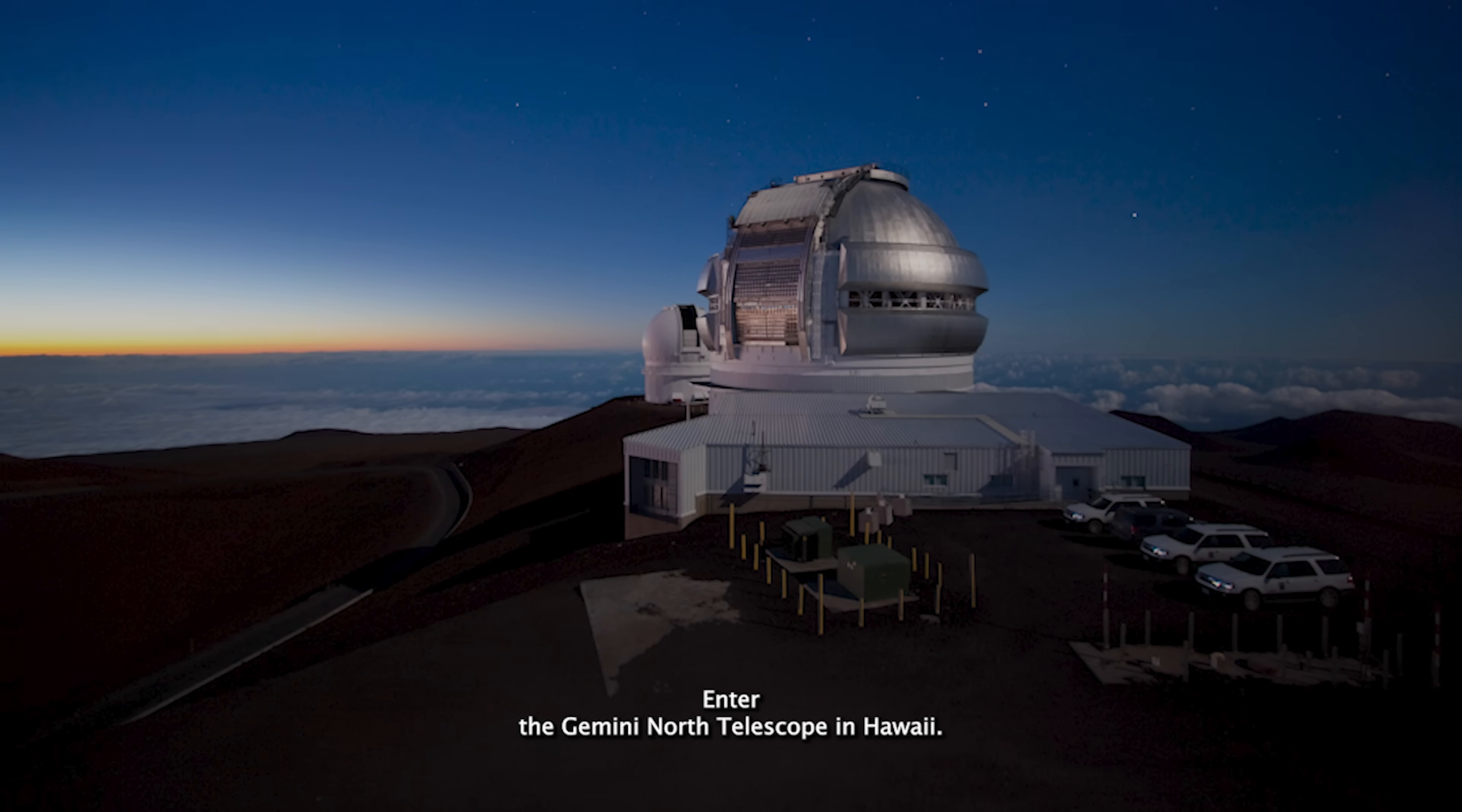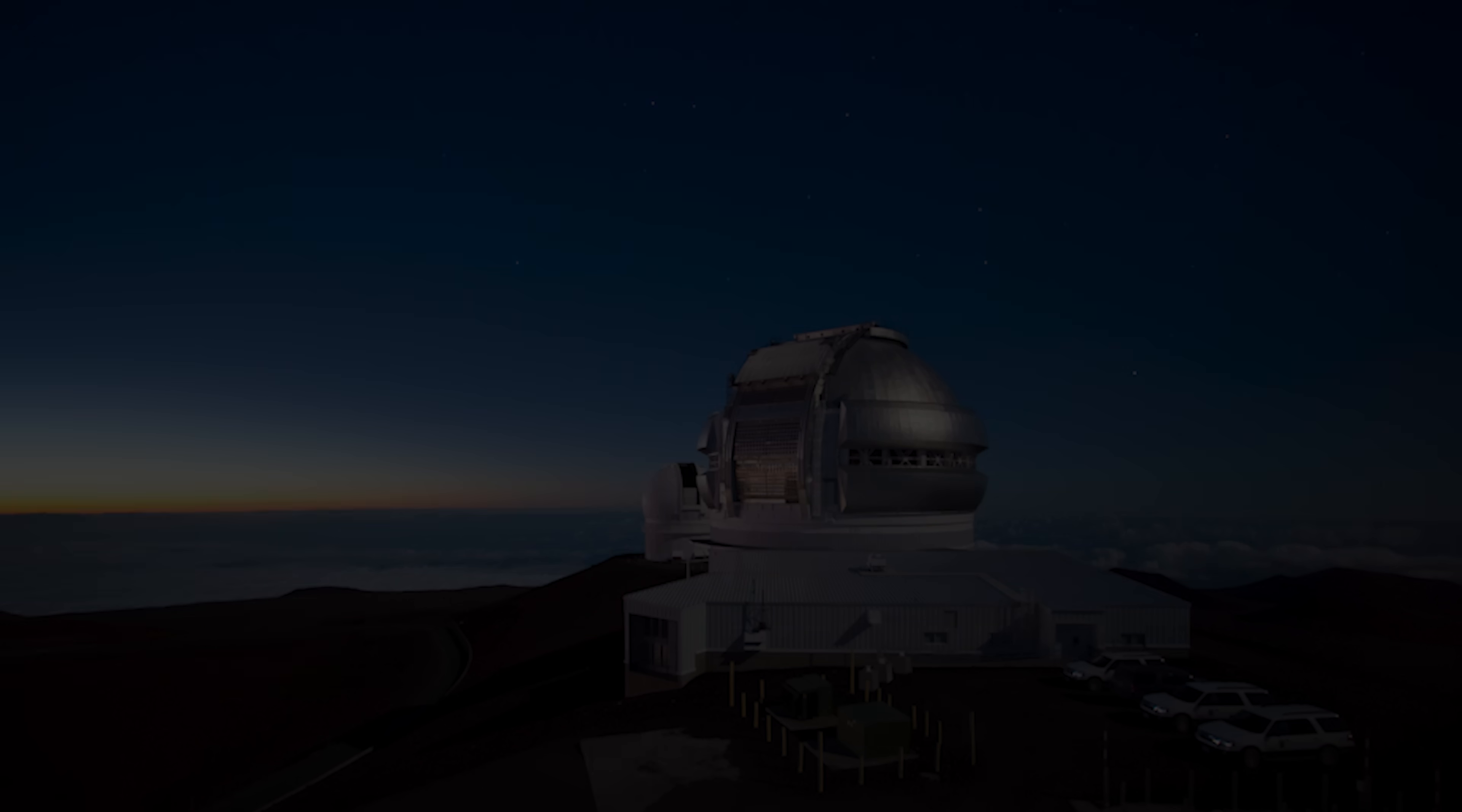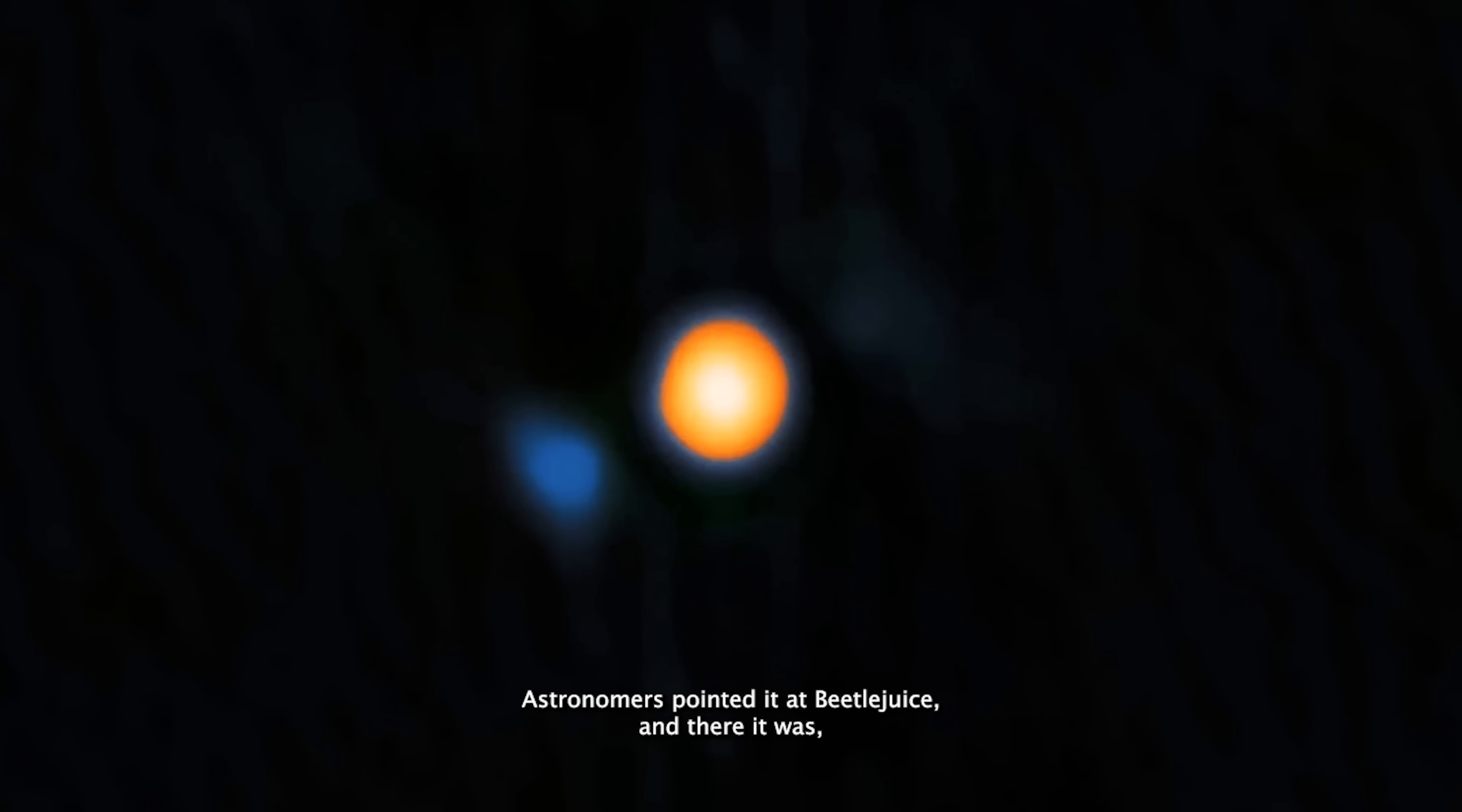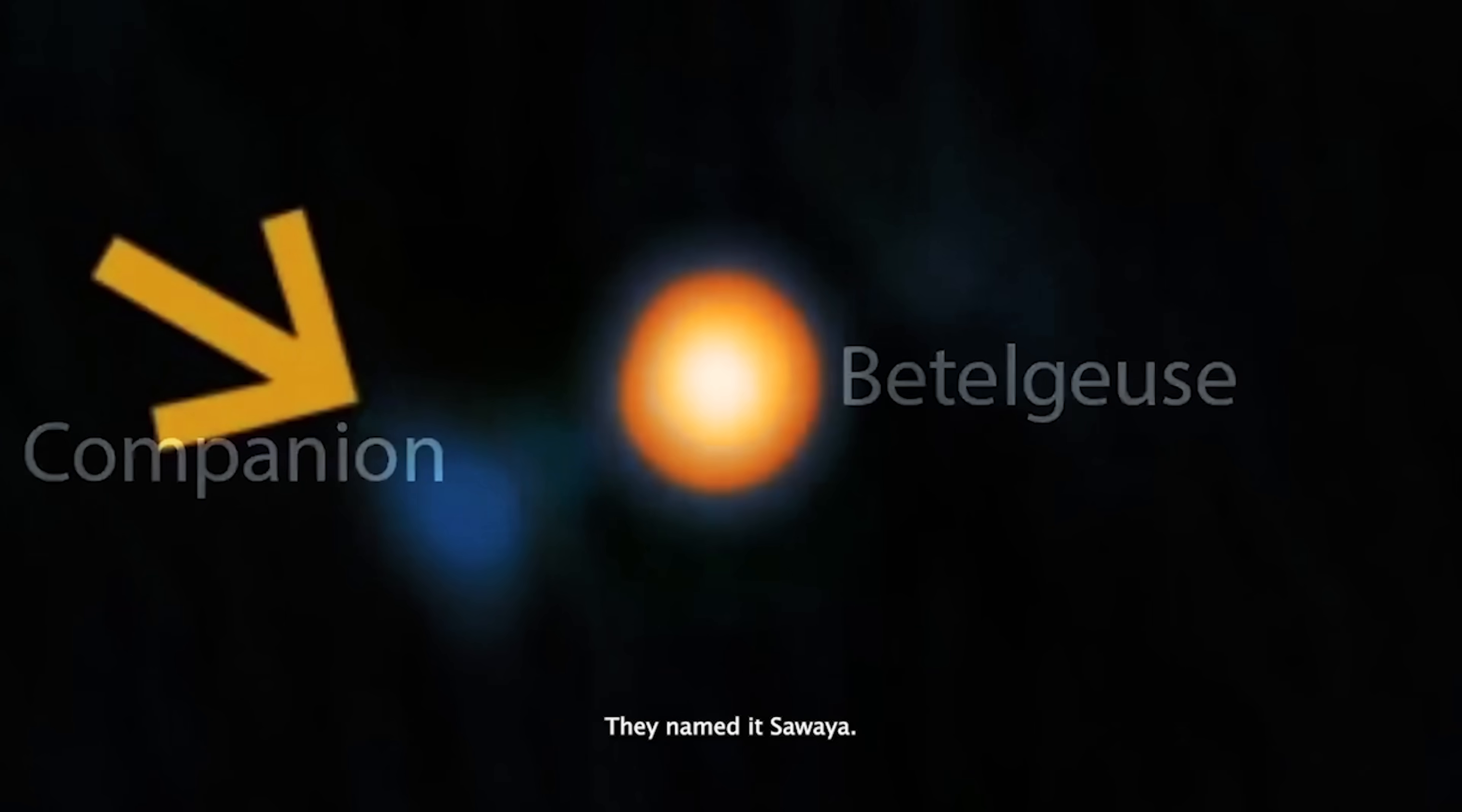Enter the Gemini North Telescope in Hawaii, armed with a specialized high-contrast imaging device. Astronomers pointed it at Betelgeuse, and there it was. A faint, shy little star hiding in the glare of the giant. They named it Sawha.